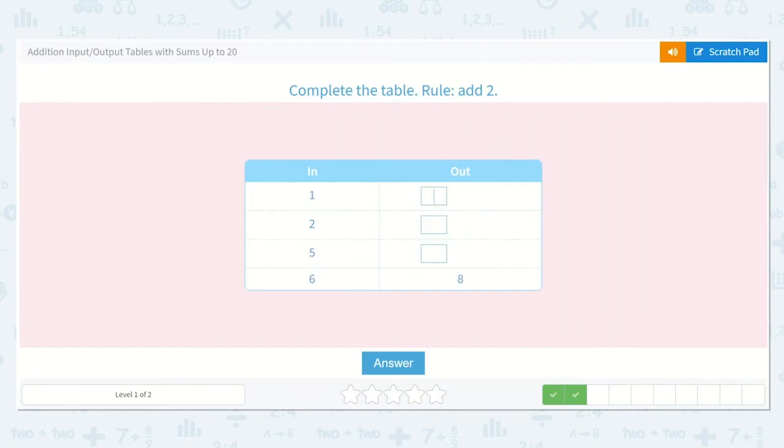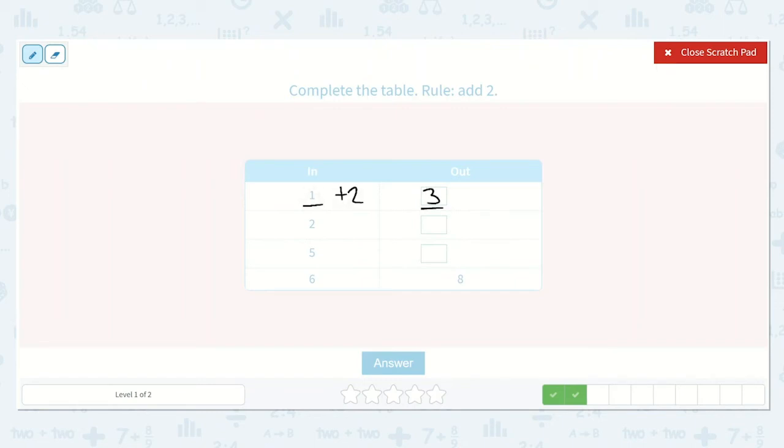Now we have add two. So I know we put in this number, we add two, and it comes out as a different number. So one plus two would just be one more than two, which is three. Two plus two, that's one of my doubles. Two plus two, let's count that. One, two, three, four. Yes, two plus two is four.